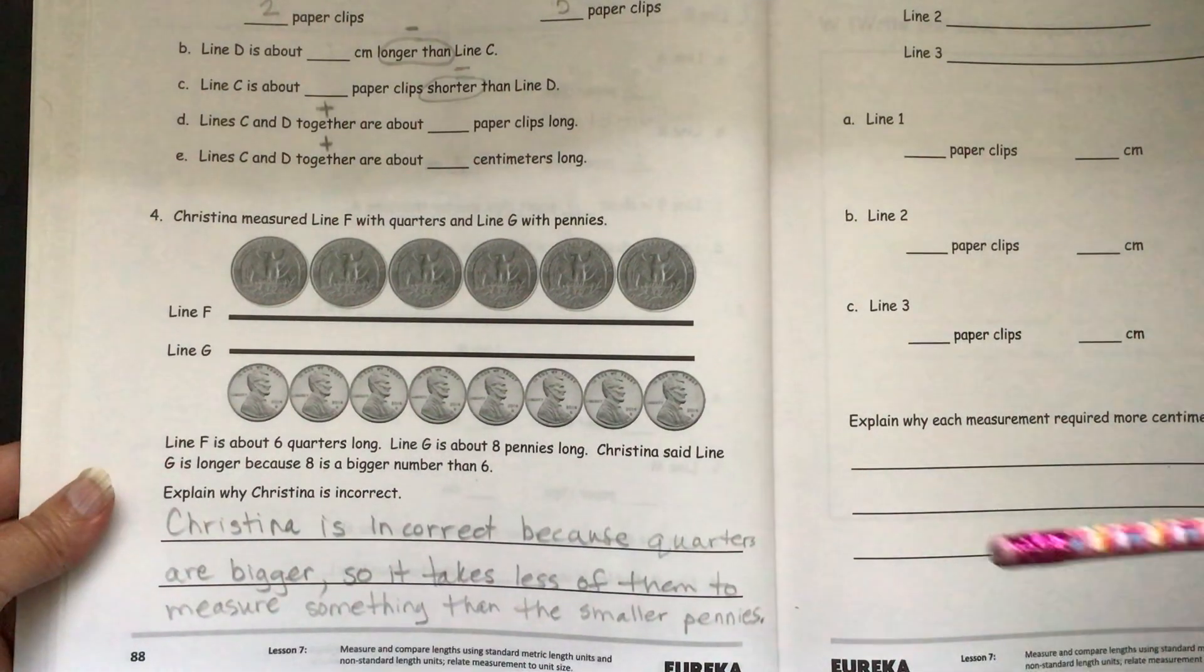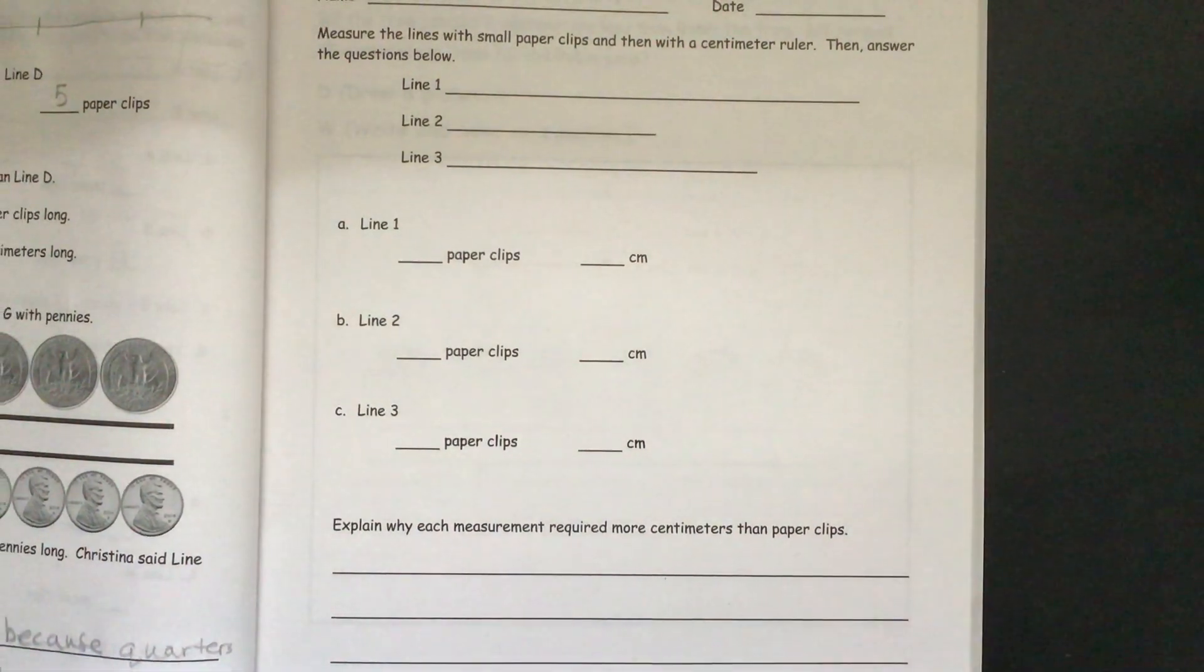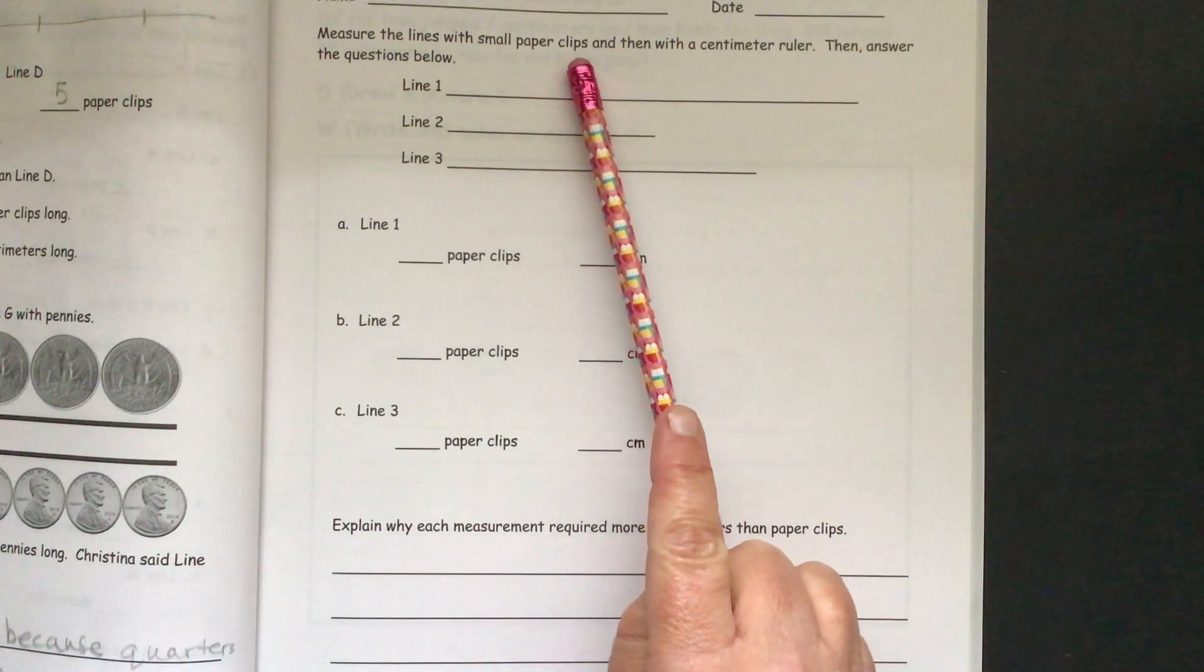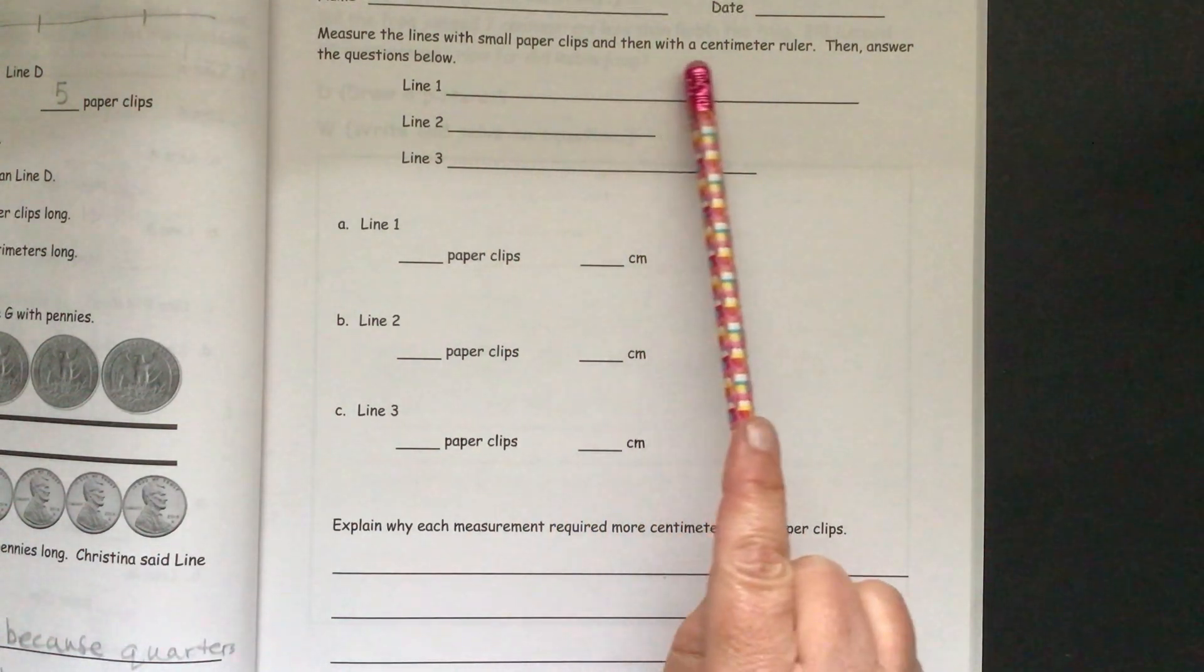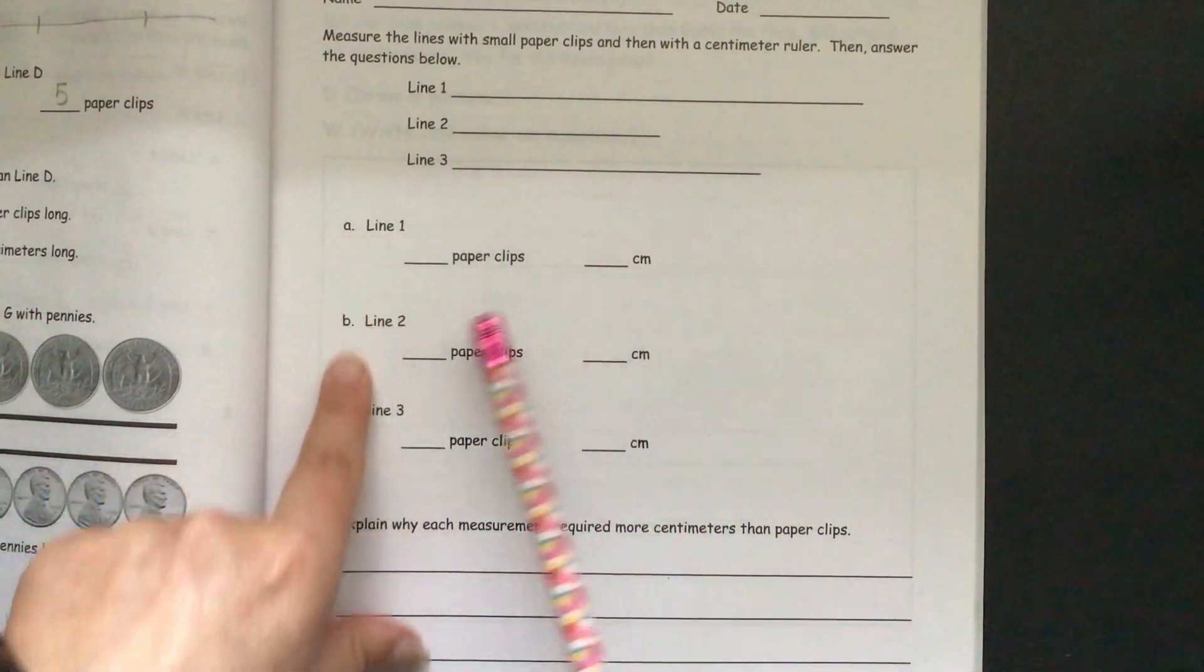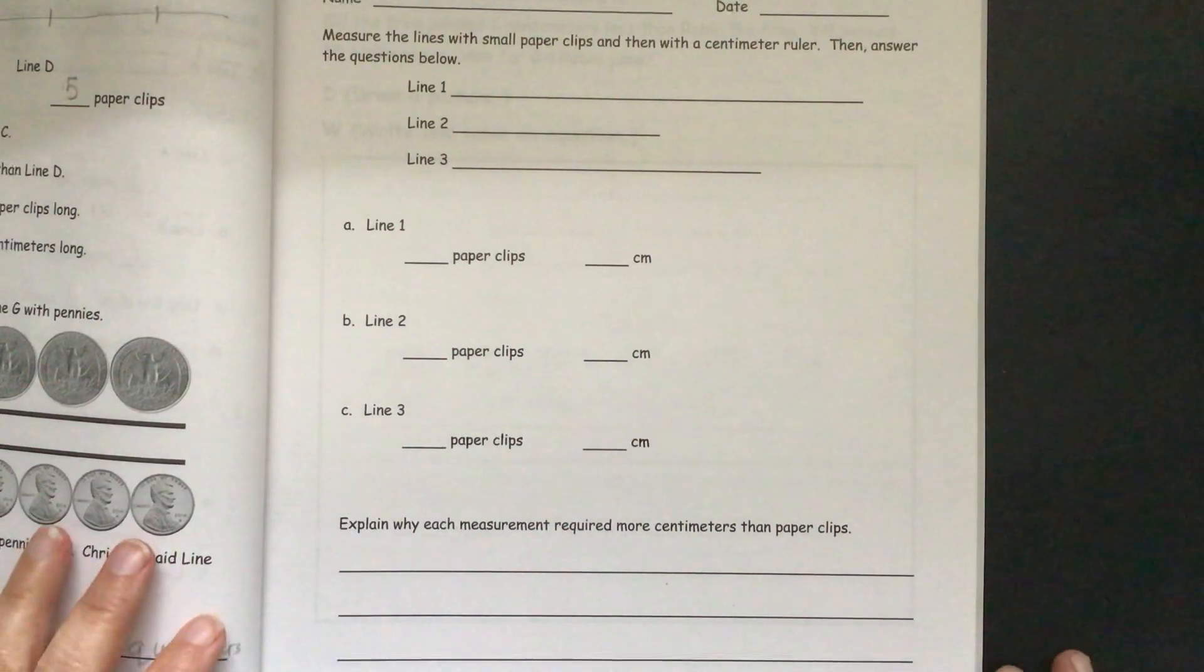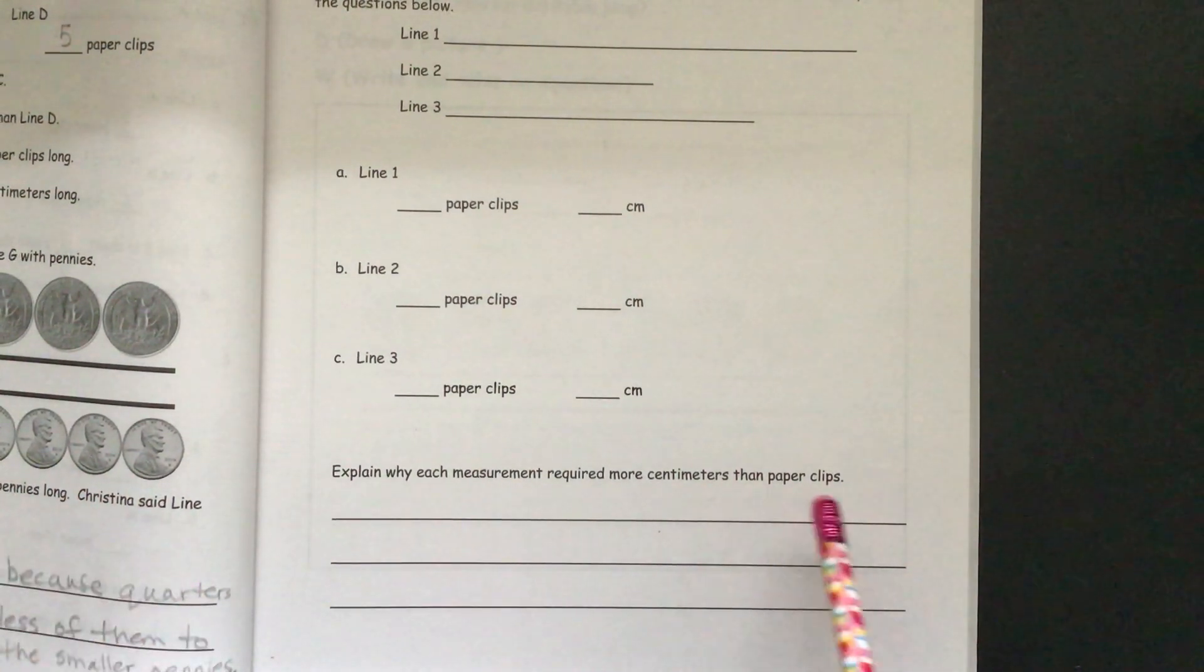So on your exit ticket, you will need to measure these lines one, two, and three with a small paper clip. Remember you're going to use your mark and measure and then a centimeter ruler. So line one, paper clip and centimeters, line two, paper clip and centimeters, line three, paper clips and centimeters. Then you have a question here. Explain why each measurement required more centimeters than paper clips.